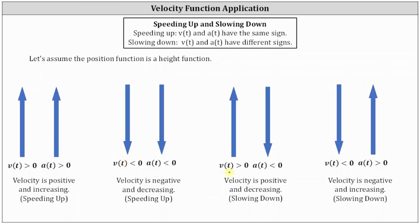If the velocity is greater than zero and the acceleration is less than zero, then the velocity is positive and decreasing, which indicates the particle is slowing down. And if the velocity is less than zero and the acceleration is greater than zero, the velocity is negative and increasing — once again, the particle is slowing down. So if the velocity and acceleration have different signs, the particle is slowing down.